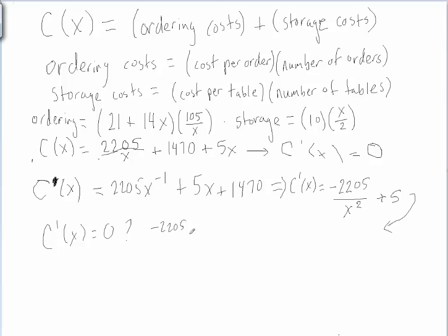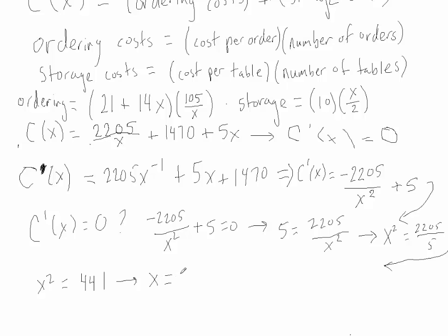So when will negative 2,205 over x squared plus 5 equal 0? Well, when 5 equals 2,205 over x squared. So we have x squared equals 441, and x equals 21. Of course, we're only going to have a positive value. So it looks like each order, we will have 21 tables.